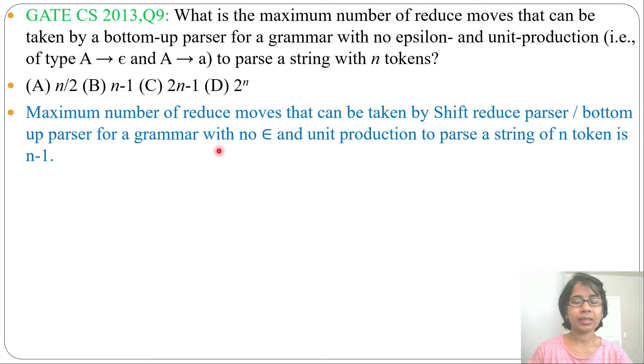I already discussed how it is n-1, just go through that video you can understand. So answer will be B, n-1. Or you can simply do a bottom-up parsing with an example and you can find that it is n-1. Just take a grammar without epsilon and without unit production.